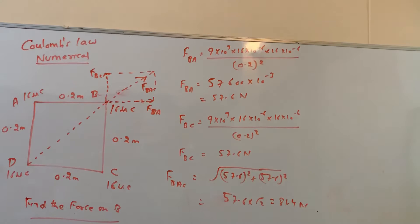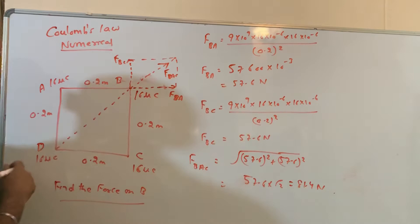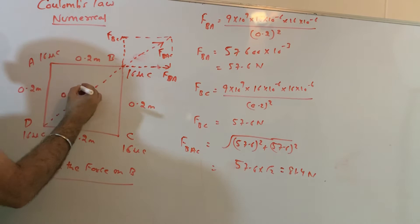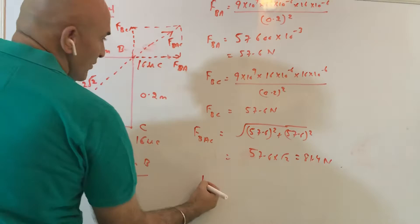Is there any other force acting? Yes, there is one more force acting which is force on B due to D. Here be careful, you have to first use Pythagoras theorem. So this distance will become 0.2 into root 2. You will use Pythagoras theorem to get a diagonal. Force on B due to D will also come in this direction.